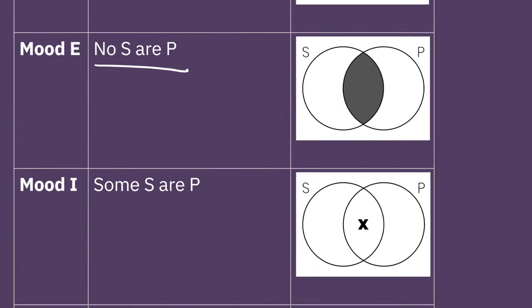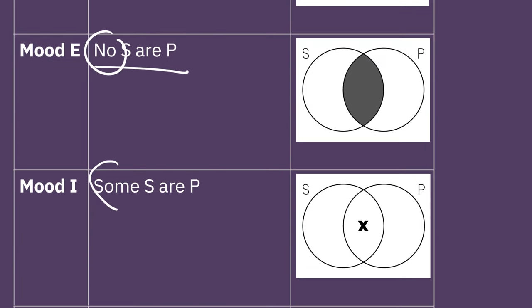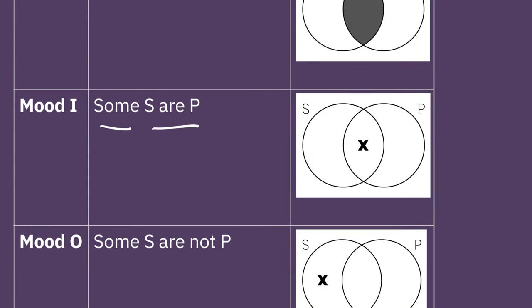Then we have, we move from a universal to a particular statement. So now we have some S are P. And then we can also say something like some S are not P.